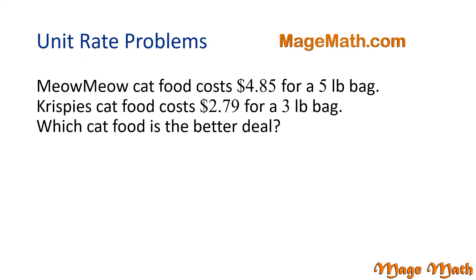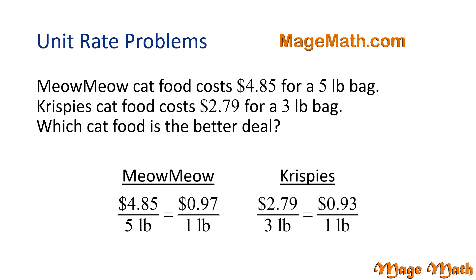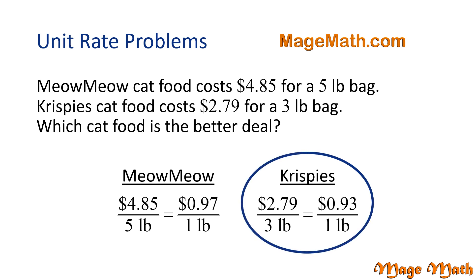Meow Meow cat food costs $4.85 for a five-pound bag. Crispy's cat food costs $2.79 for a three-pound bag. Which cat food is the better deal? Let's find the unit price per cat food and then compare. The unit price is found by dividing the cost by the number of pounds. For Meow Meow, we take $4.85 divided by five pounds, which gives us 97 cents per pound. Crispy's is $2.79 divided by three pounds, which equals 93 cents per pound. The better buy is Crispy's because it has the lower price per pound.